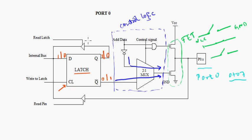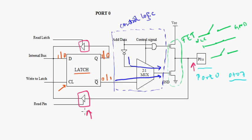And here we have got a buffer. If we want to read what we have written onto the latch we can do so using this buffer. We will simply enable the buffer and we will read what we have written onto the latch. And this is also a buffer but this reads data from the pin. For example, if an external device has written something onto the pin here, and if we want to read that data we will read it through this buffer — we will enable the buffer and read what an external device has written to the port pins.